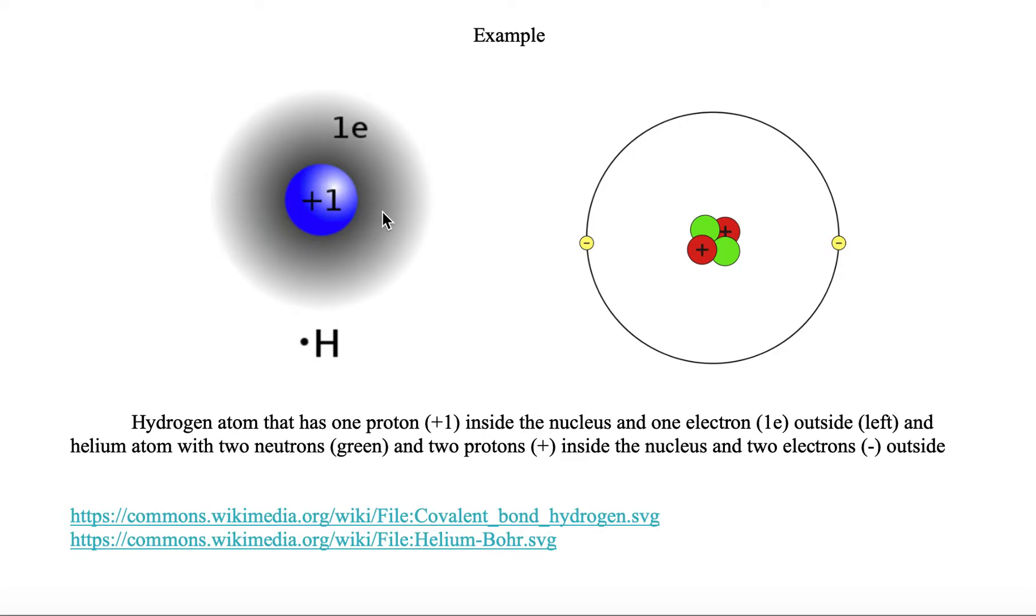This grayish region surrounding the proton is where a single electron could be located. So we see a single electron in this region surrounding the nucleus.